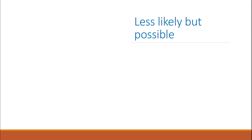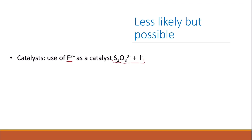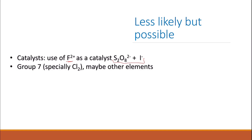Topics which are less likely to be in the exam — though still possible, as I cannot read the examiner's mind. First, catalysts: there was a six-mark question last year about the use of Fe²⁺ as a catalyst for a reaction, so it's very unlikely they'll ask the same question again this year. However, catalysts may come in a different form with different questions. Group 7 — especially chlorine and the disproportionation reaction of chlorine — had a whole question last year, so it's very unlikely to appear the same way again. If they ask about Group 7, it'll likely be about the trends of the oxidation and reduction properties of the halides and halogens.